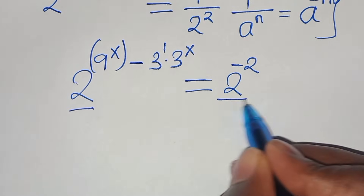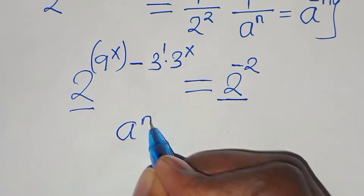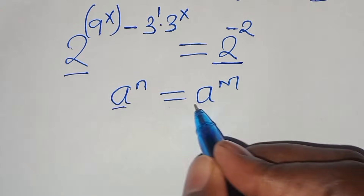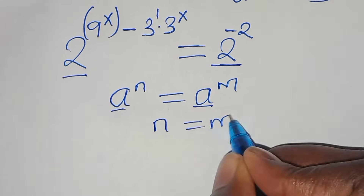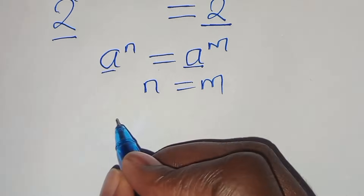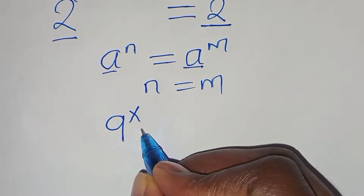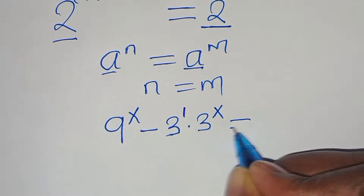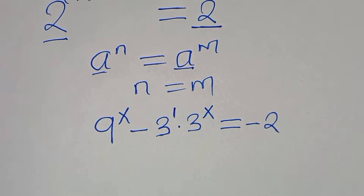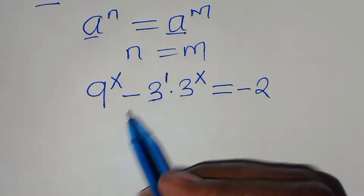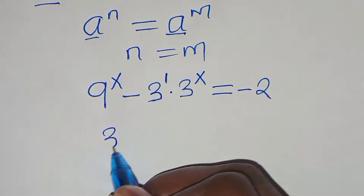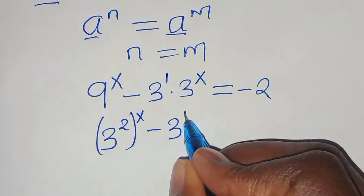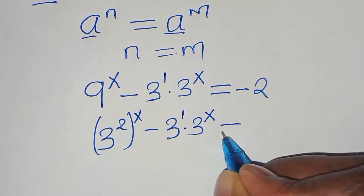Since the bases are common — that is, a to the power of n equals a to the power of m implies n equals m — we have 9 to the power of x subtract 3 raised to the power of 1 times 3 to the power of x equals minus 2. We can express 9 to the power of x as 3 to the power of 2 raised to the power of x, minus 3 raised to the power of 1 times 3 to the power of x, equals minus 2.